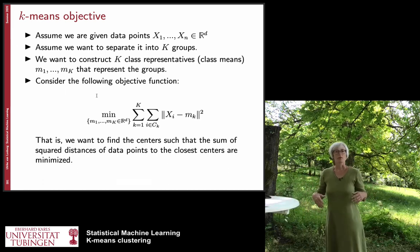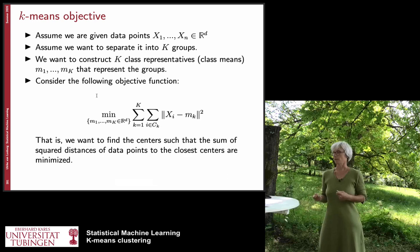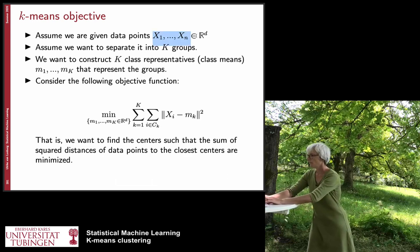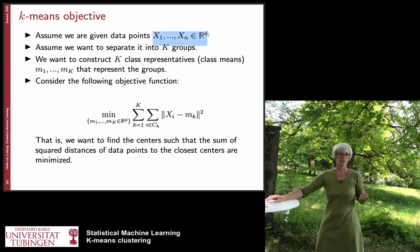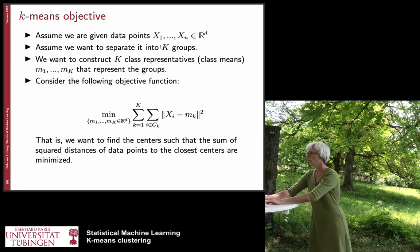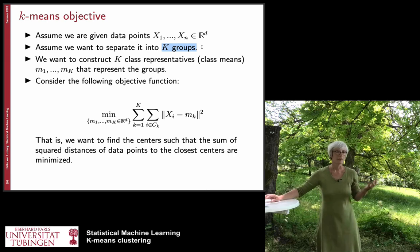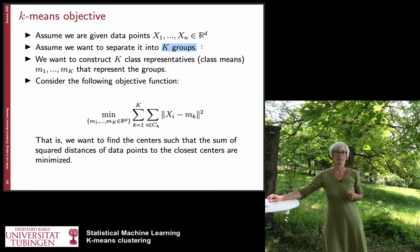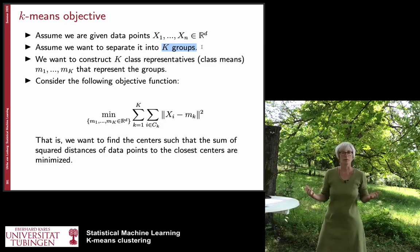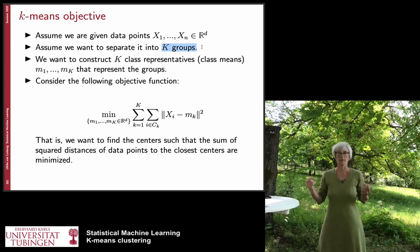The k-means algorithm tries to solve one particular objective. We are given n data points that live in some Euclidean space R^d, and we want to separate them into k different clusters. k is a parameter that we need to give to the algorithm — it's typically not so easy to set, but sometimes also not so important. For now, simply assume that we know how many clusters we are looking for, say 10 clusters.